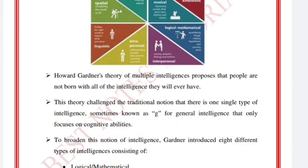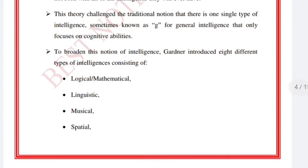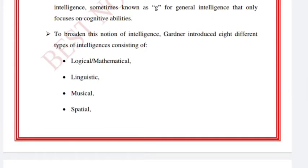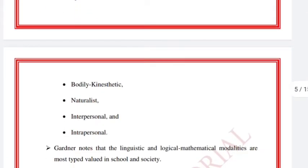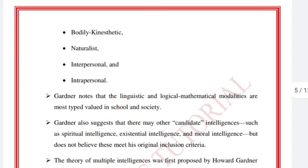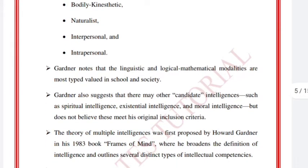To broaden this notion of intelligence, Gardner introduced eight different types of intelligence. These include logical-mathematical, linguistic, musical, spatial, bodily-kinesthetic, naturalist, interpersonal, and intrapersonal. Gardner noted that linguistic and logical-mathematical modalities are most valued in school and society.